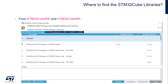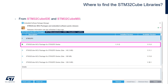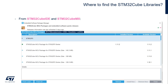Another method to get these libraries and to download and install them is from the STM32 Cube IDE or the STM32 Cube MX. In the embedded software packages manager, you can directly select the STM32 series you want to install. For example, for F0, I have version 1.11.2 installed here. You can do that for all the different series under STM32 Cube IDE or STM32 Cube MX.